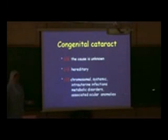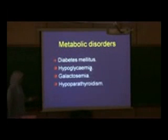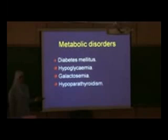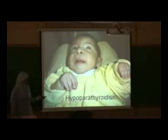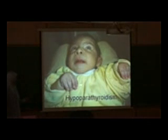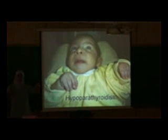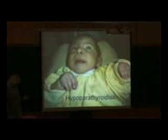Metabolic disorders may also cause congenital cataract, such as hypoglycemia, galactosemia, and hypocalcemia disease. We will show an example here — this is a baby, and what is seen is called leukocoria or white pupil, due to cataract caused by hypocalcemia. If we examine the eyes, we may reveal the presence of the congenital cataract.